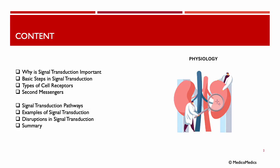In this lecture we will take a dive into the concept of signal transduction, why it's important, its basic steps, the types of cell receptors involved, something called second messengers. Further, we will continue talking about some different pathways, some examples of signal transduction, what happens when there is a disruption, and end with a summary.